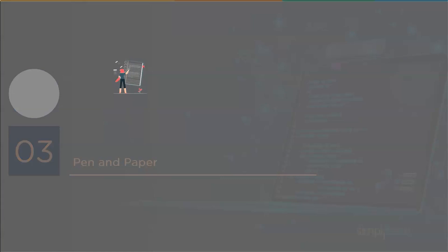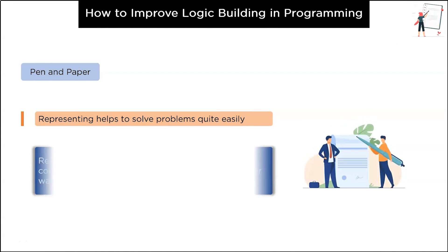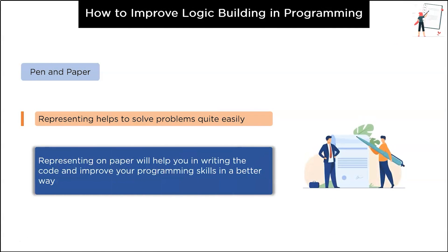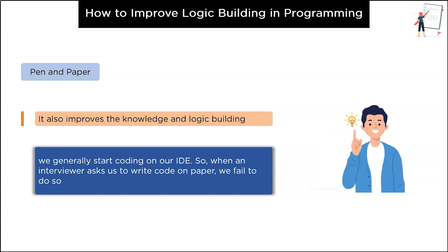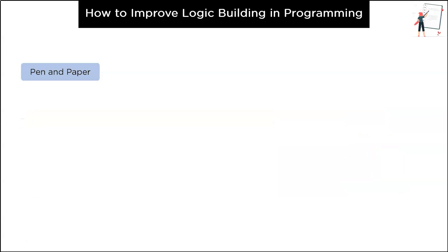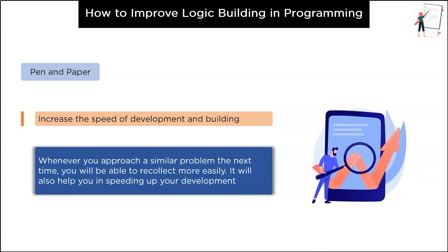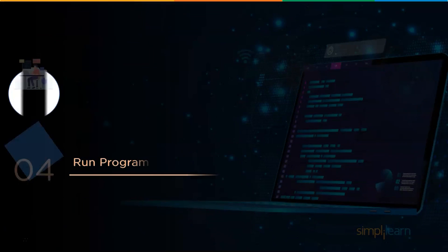Let's move on to the third stage: pen and paper approach. Representing a problem on paper will help you write the code and improve your programming skills. Trial and error methodologies are much easier to implement on paper before applying the final solutions through computers. When an interviewer asks you to write code on paper, you should be prepared. Always try to write and implement the algorithm before starting on your IDE. This also increases the speed of development.